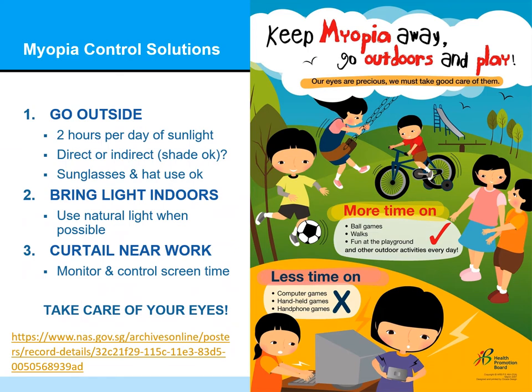That January 2020 EyeNet article talks about three myopia control solutions. Solution one: go outside. Solution two: bring light indoors. Solution three: curtail near work. Let's go over each one of those in a little bit more depth.